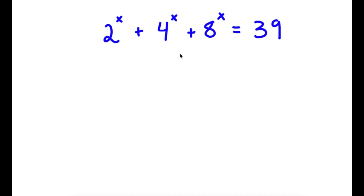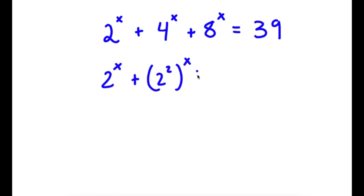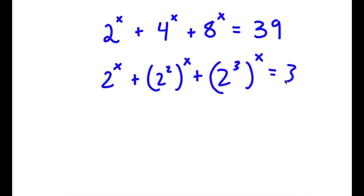In this problem, I have 2 to the power of x plus 4 to the power of x plus 8 to the power of x is equal to 39. To solve this, I'm going to first rewrite this as 2 to the power of x, plus 2 squared to the power of x, plus 2 to the power of 3 to the power of x, is equal to 39.